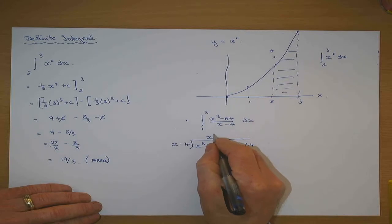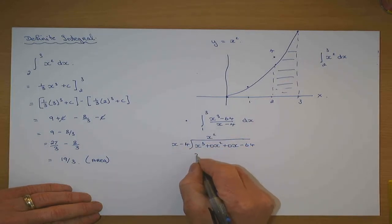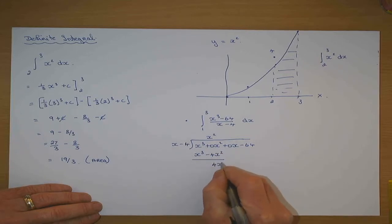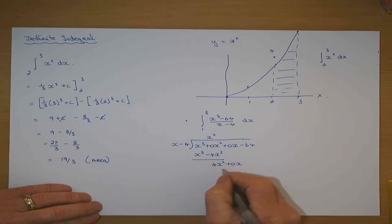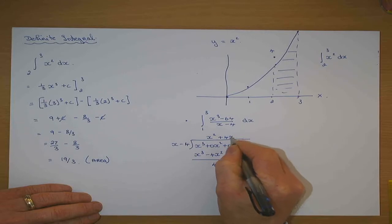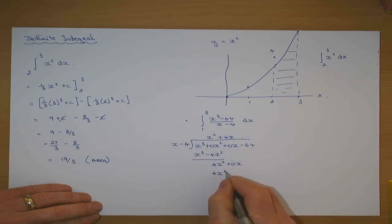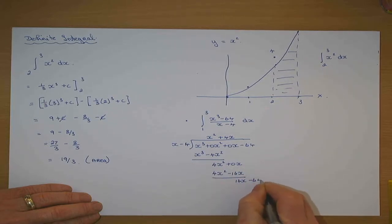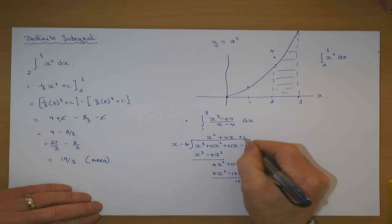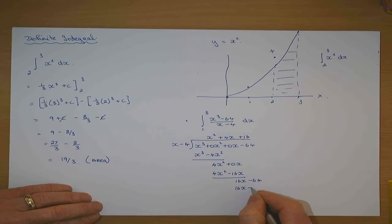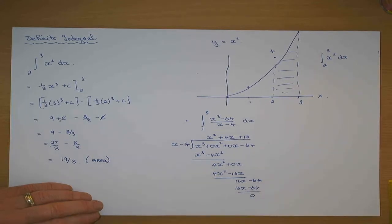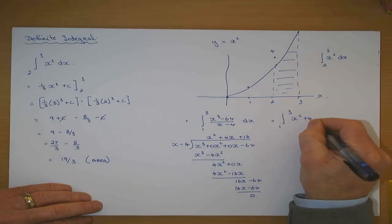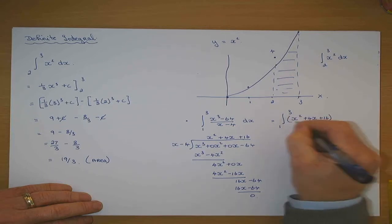x into x cubed gives x squared. x squared times x gives x cubed; x squared times minus four gives minus 4x squared. Change the sign on the lower line and add: 4x squared and no x term. x into 4x squared gives plus 4x; 4x times x gives 4x squared, 4x times minus four gives minus 16x. Change the sign and add: 16x minus 64. x goes into that plus 16 times; 16 times x minus 4 gives remainder zero. So that's the same as the integral from one to three of x squared plus 4x plus 16 dx.